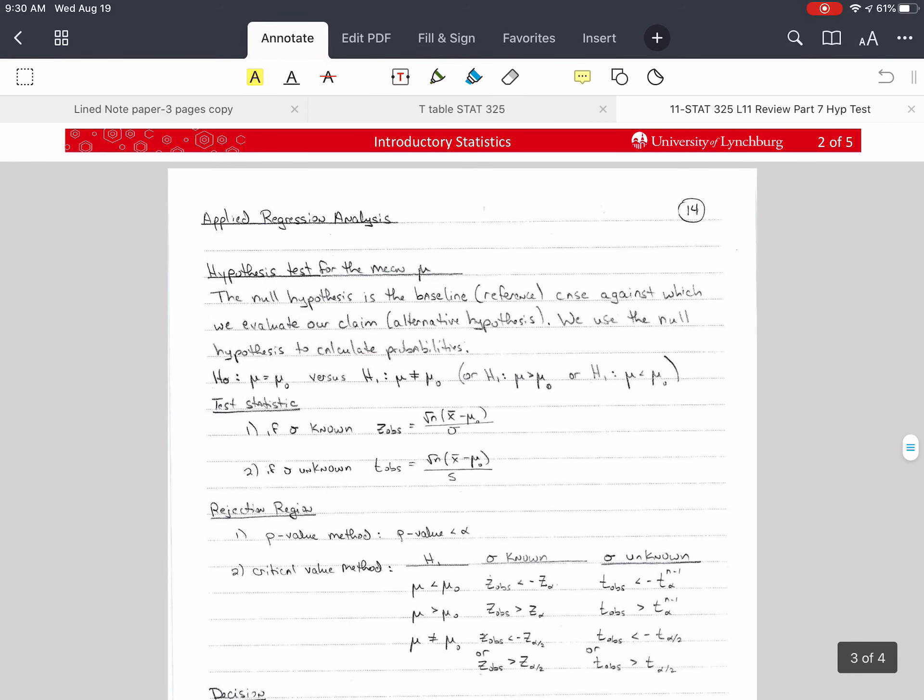First thing is the null hypothesis is the baseline or reference case, and we use that null hypothesis as the case under which we calculate probabilities. So what we do is we say, assume that the null hypothesis is true unless we can prove otherwise.